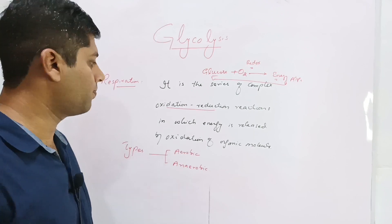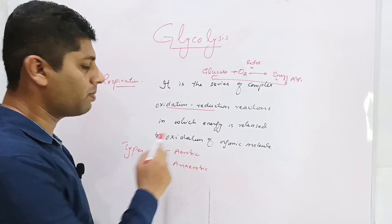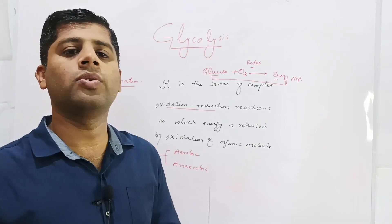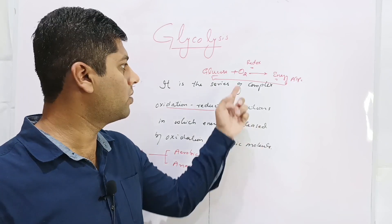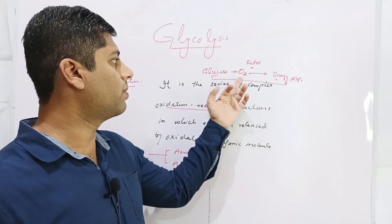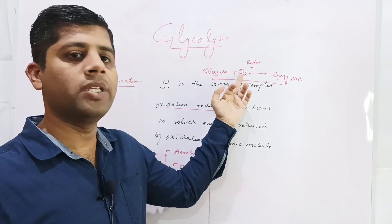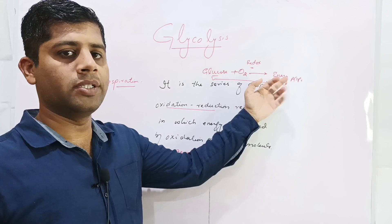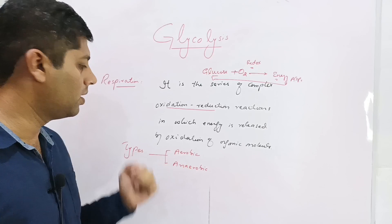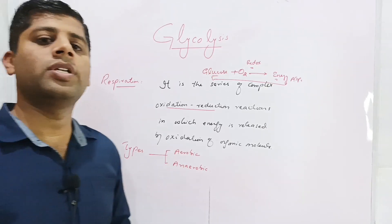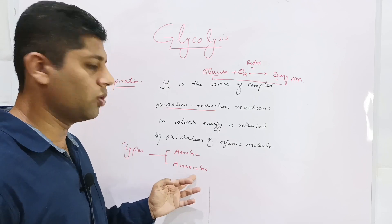Respiration has two types: aerobic respiration and anaerobic respiration. Aerobic respiration refers to the respiration in which a glucose molecule or any other organic molecule is oxidized in the presence of oxygen. Atmospheric oxygen is available for the breakdown of the glucose molecule and energy is released in the form of ATP. Respiration in the absence of oxygen is called anaerobic respiration.